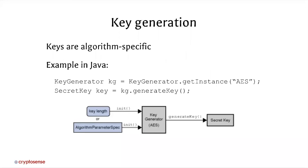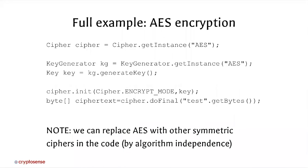Let's look at the first example: generating keys. We generate a key specific to the algorithm we're going to use. In Java, we set up a key generator for AES and then call the method to generate a key. With just those few lines we can do real encryption: ask for a cipher of type AES, generate an AES key, initialize the cipher in encrypt mode with that key, and encrypt the string "test" into a ciphertext byte array. We can replace AES with any other available cipher — this is an example of crypto agility or algorithm independence.